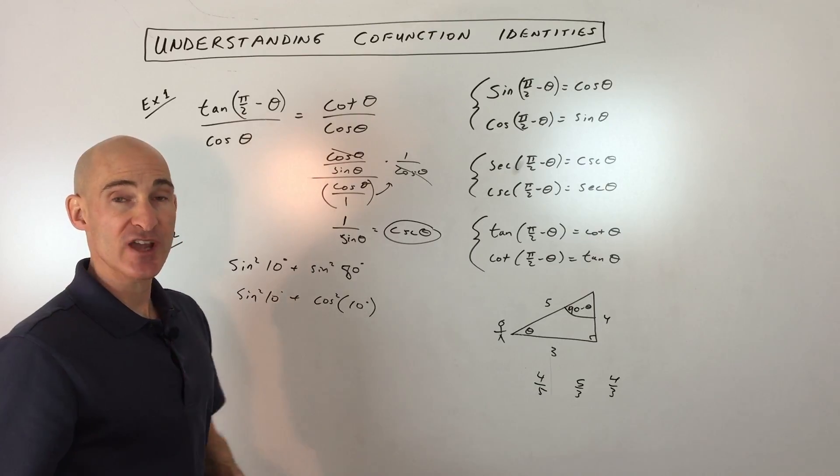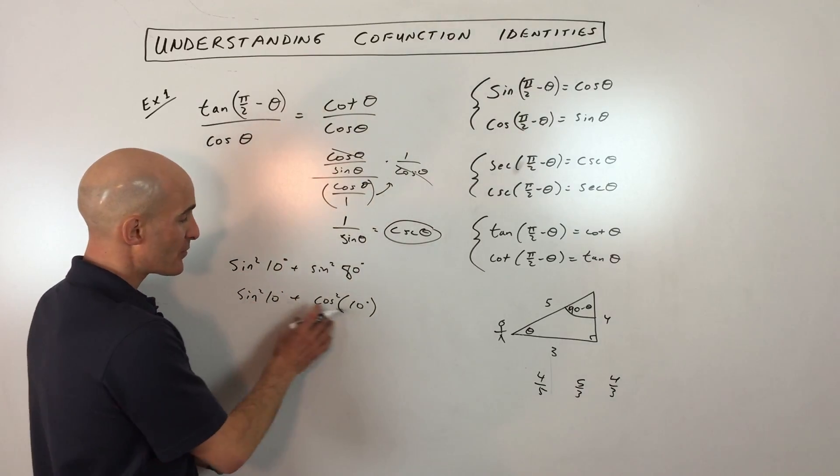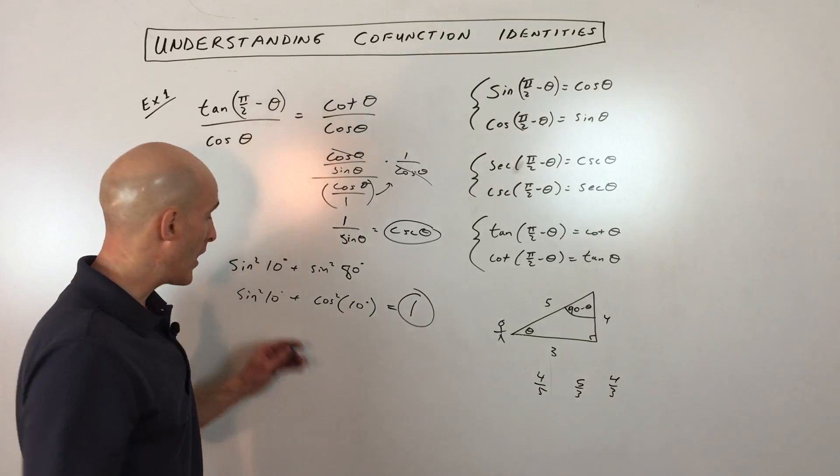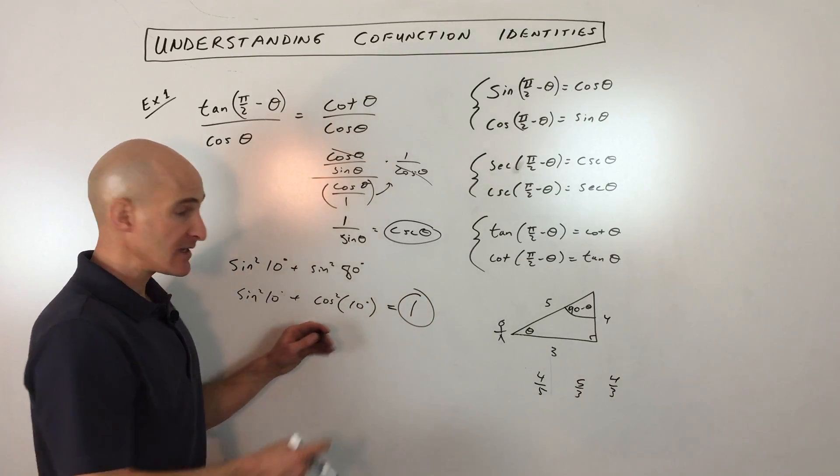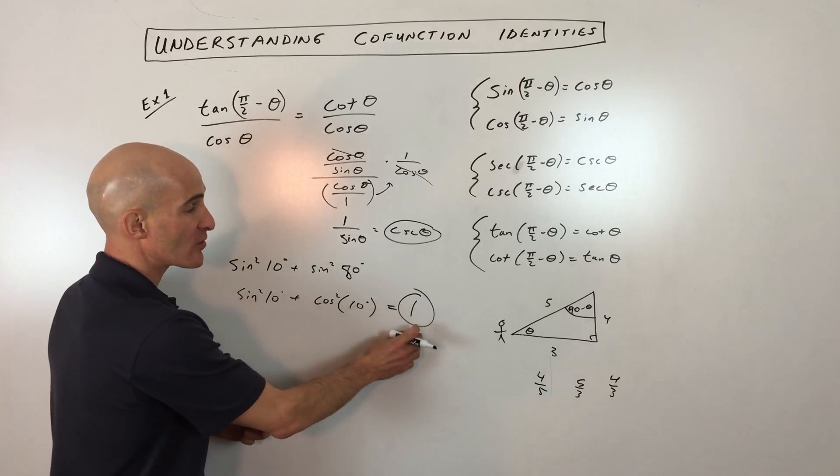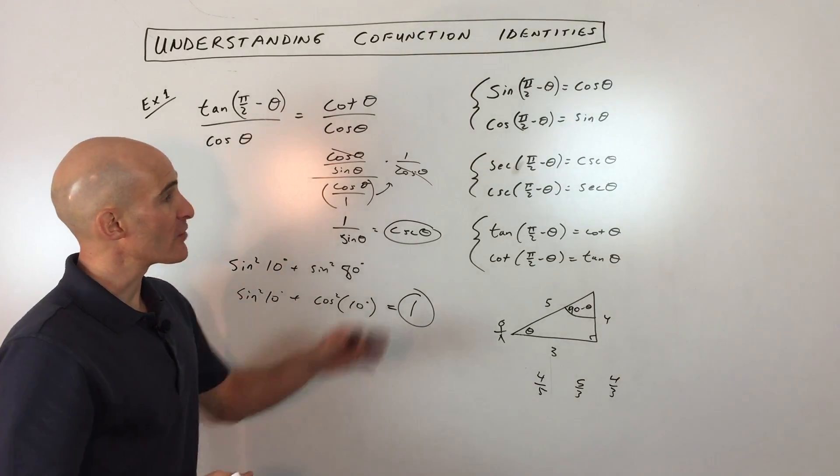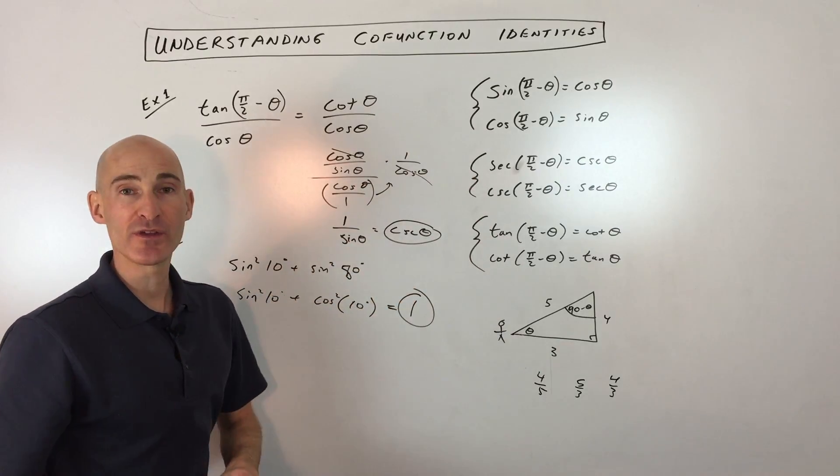And you probably learned from earlier in the chapter or earlier in the year that sine squared plus cosine squared equals one. So this whole thing condenses down to one. This is just the Pythagorean trig identity. As long as these angles are the same, sine squared plus cosine squared is equal to one. So this is a brief overview here of how to understand working with cofunctions.